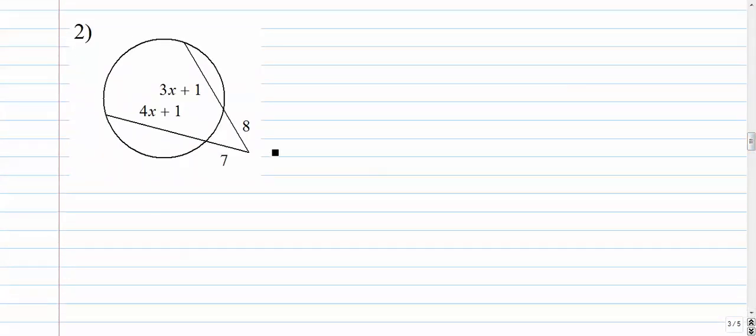Number 2. Might be a good time to pause this. Try it yourself. We're going to go to that point of intersection. We're going to say 8 times the whole thing. The whole thing is 8 plus this. So it's 8 plus 3x plus 1 equals 7. 7 is the side that's closest, the little segment that's closest to the point of intersection times the whole thing. 7 plus 4x plus 1.